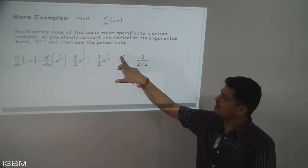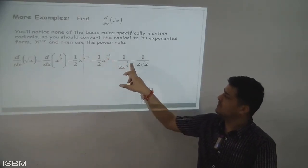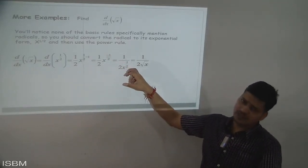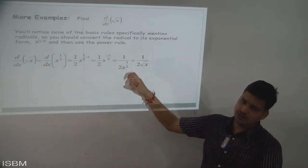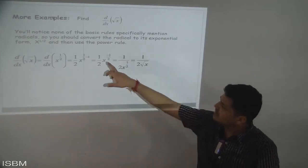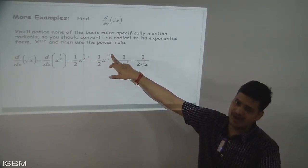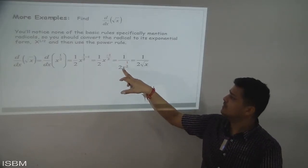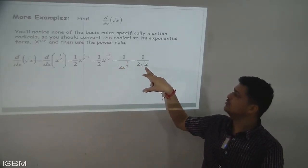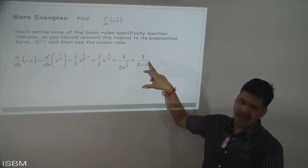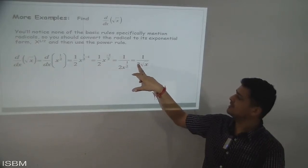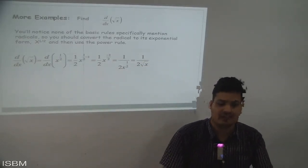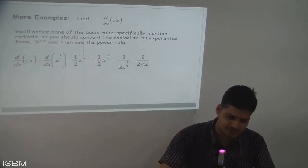Since the exponent is negative, x^(−1/2) goes to the denominator and becomes 1/(2·x^(1/2)), which we can write as 1/(2√x). That is the derivative of √x.